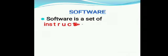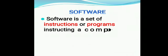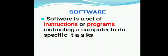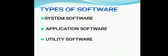Software is a set of instructions or programs that instruct the computer to perform a specific task. There are three types of software: system software, application software, and utility software.